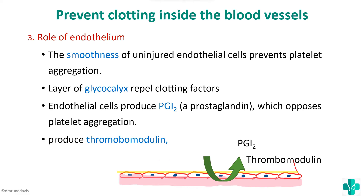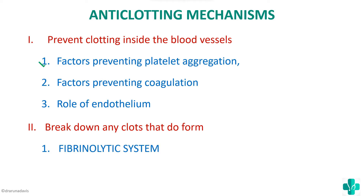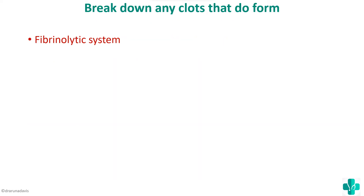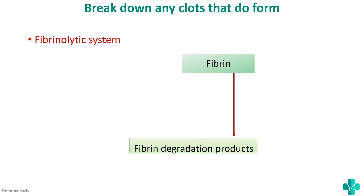In summary of anti-clotting mechanisms: factors preventing platelet aggregation include prostacyclin; factors preventing coagulation include natural anticoagulants heparin, antithrombin-3, and protein C; and the role of the endothelium includes its smoothness, glycocalyx layer, PGI2, and thrombomodulin. Next is the fibrinolytic system — the mechanism by which any clots that form are broken down. In fibrinolysis, fibrin is broken down into fibrin degradation products by plasmin, also called fibrinolysin.